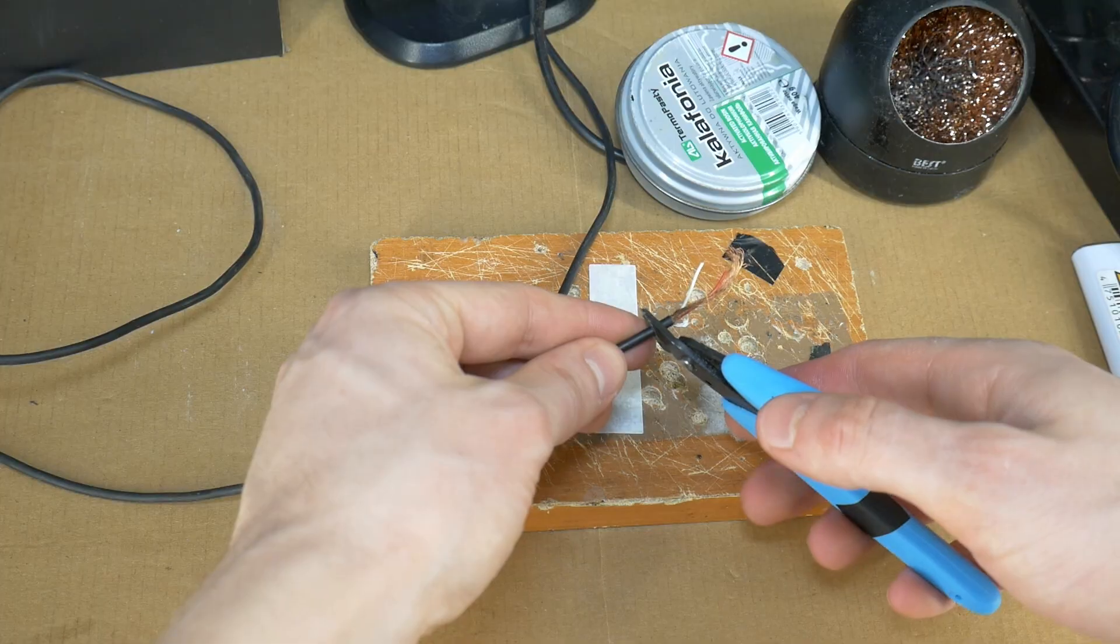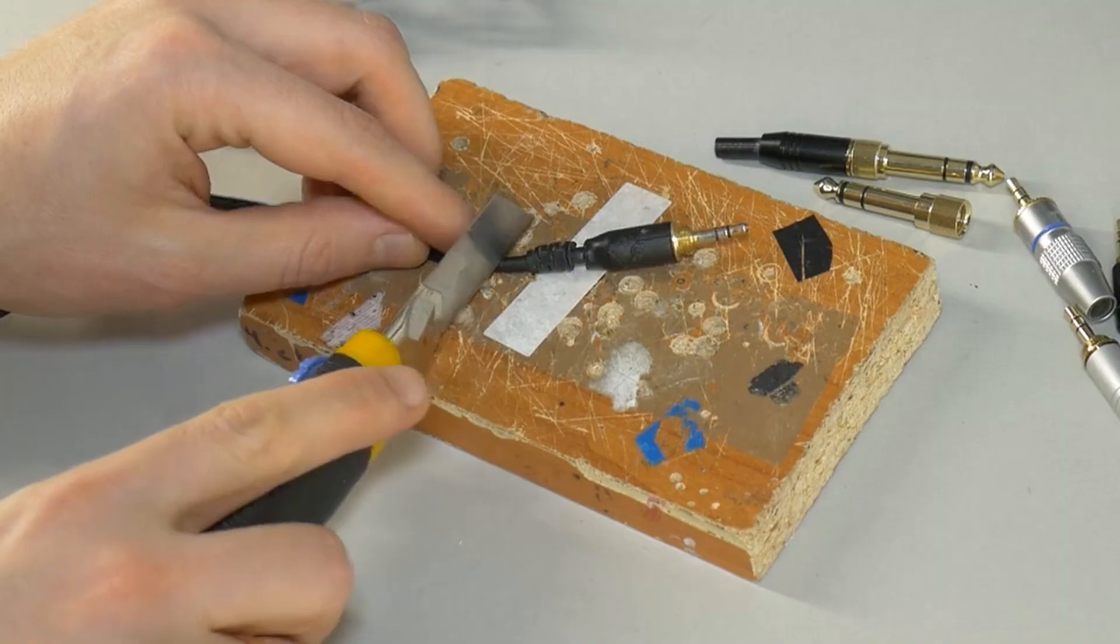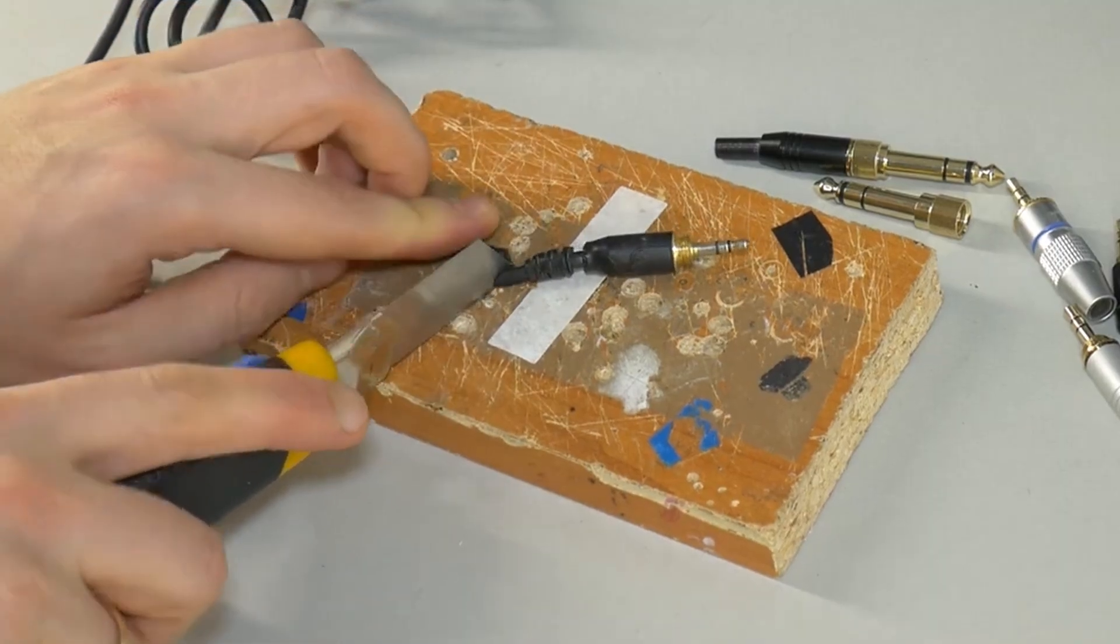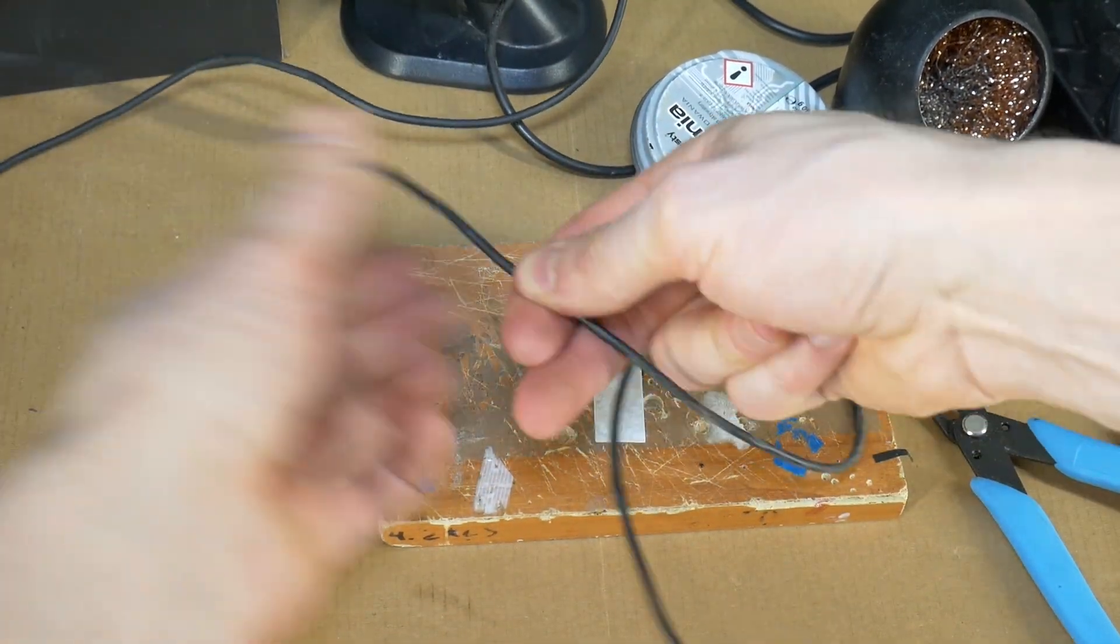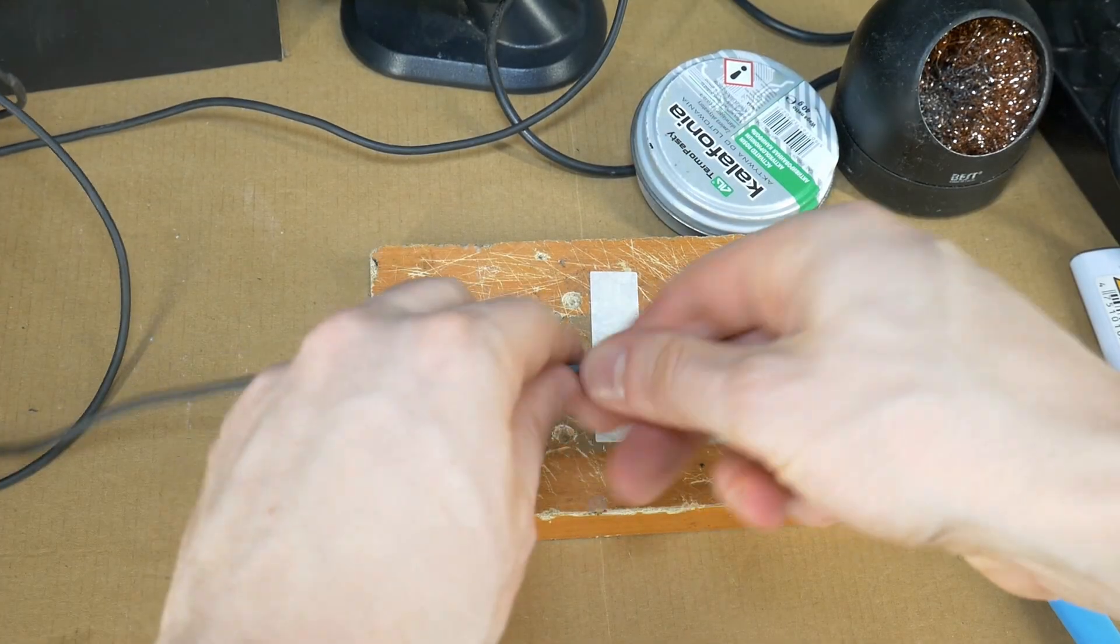Step one is to cut off the damaged cable end or the 3.5mm jack if it's broken. Then, stretch the cable several times from the speaker side to the clean end. This helps ensure the jack lasts longer.